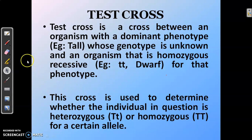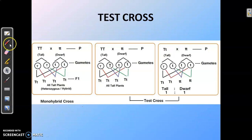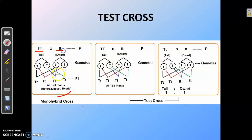A test cross is used to determine whether the individual in question is heterozygous or homozygous in nature. Now let us look at this picture. Here we can see two tall plants and a dwarf plant. The dwarf plant, being recessive, has genotype small t small t. But the genotype of a tall plant can be of two types — either homozygous tall (capital T capital T) or heterozygous tall. To determine which it is, we need to do a test cross by crossing the tall plant with a dwarf plant.